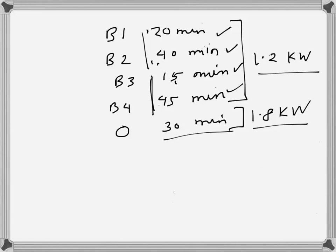In the electric stove there are four burners. They run for 20 minutes, then 40 minutes, 15 minutes, and then 45 minutes. There is an oven that runs for 30 minutes.